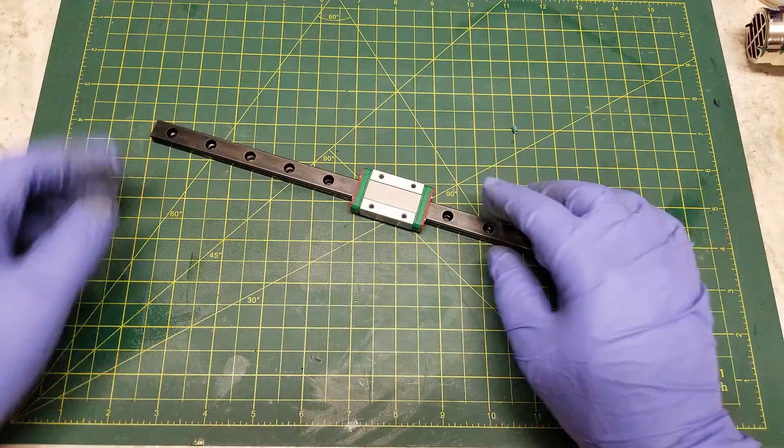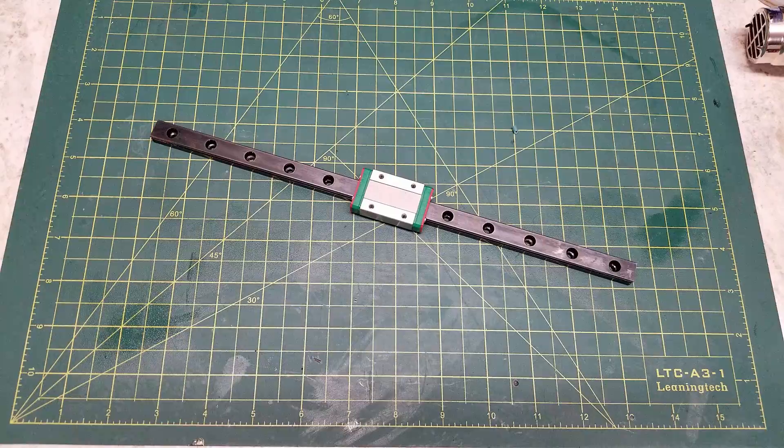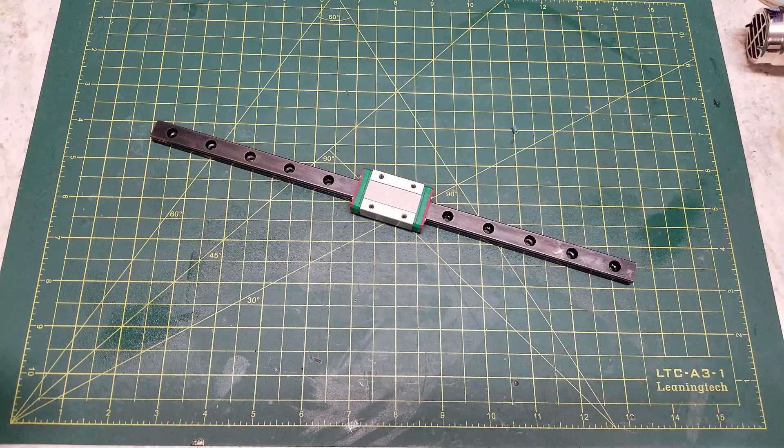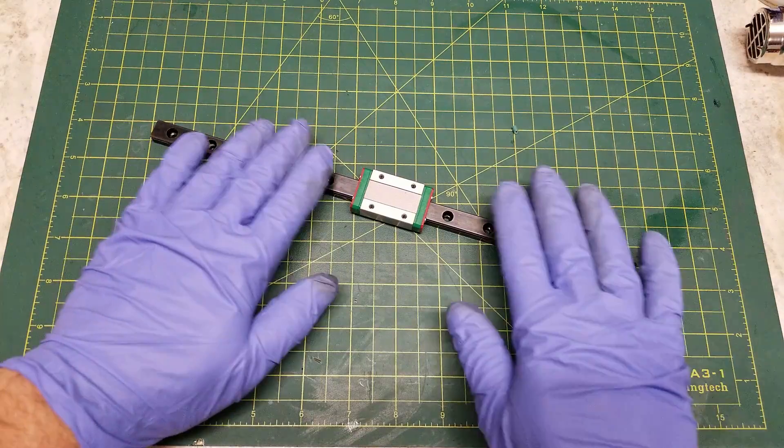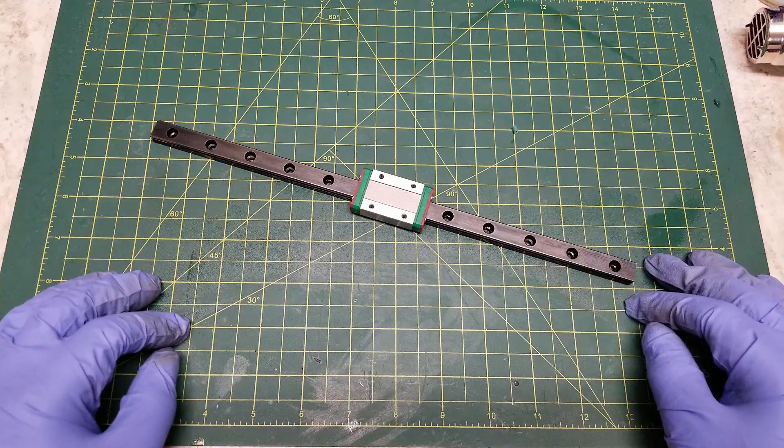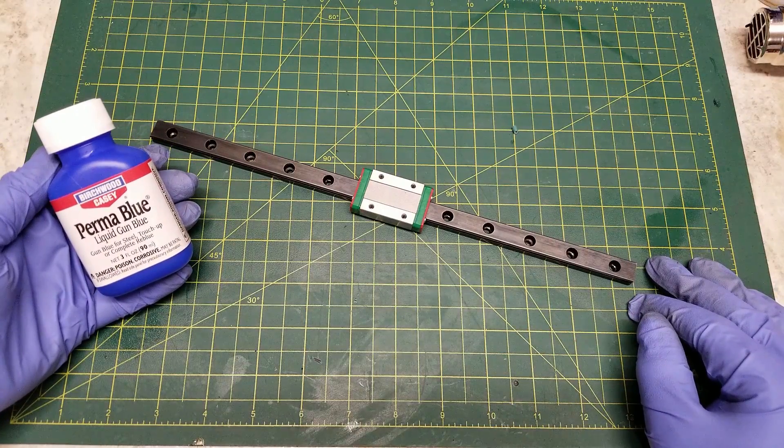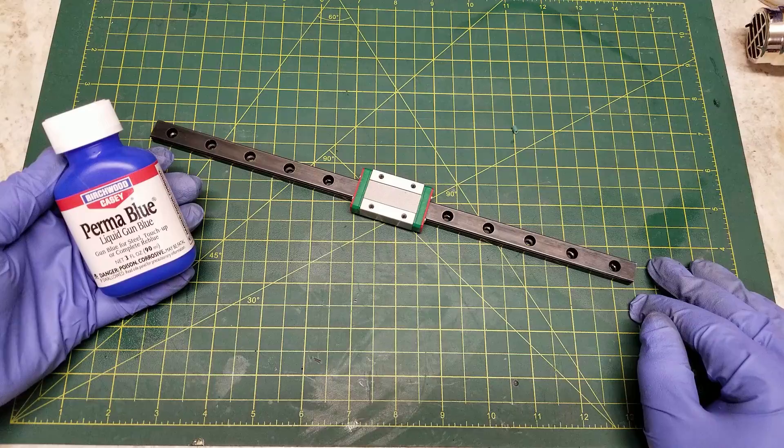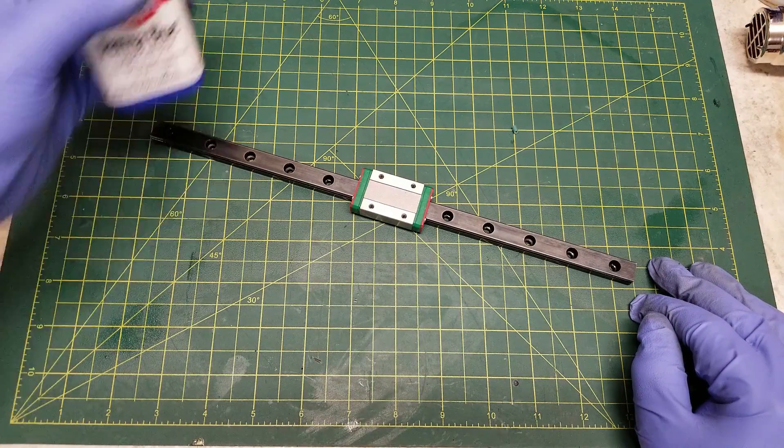Now as for wear this will not last as long as a true hot bluing. But we do not want to hot blue our linear rails because they are already hardened and they may warp. So cold bluing does give a nice dark gray finish. You may see it start to wear off after a few hundred hours of printing especially in locations such as where the ball bearings run or if your rubber wipers rub on the rails themselves. But this should last for quite a while.